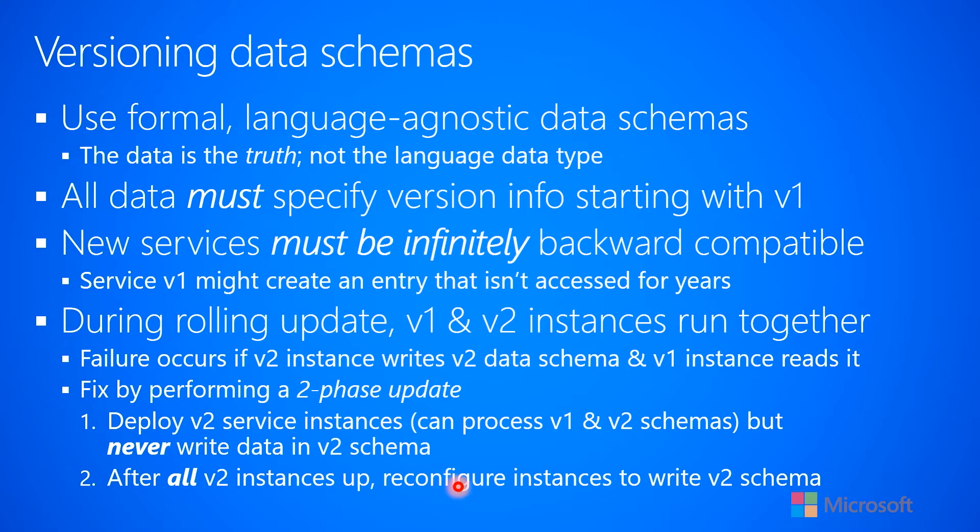After all instances in the cluster are updated to version 2, you do a reconfiguration — gracefully bring services down, change an environment variable to flip which data schema to use, and bring up v2 of your code again. Now the code can read v1 schemas, modify them, and write them back out as v2 schemas. Or perhaps only new records get created as v2 schemas — that's up to you. But you can only start writing v2 schemas once you know that all running instances can handle them.